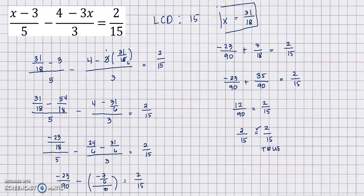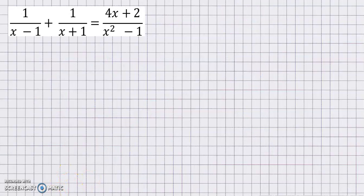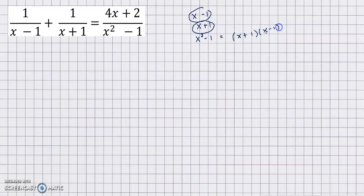For the last example, we identify the LCD of the denominators: x minus 1, x plus 1, and x squared minus 1. Since x squared minus 1 factors as (x plus 1)(x minus 1) by the difference of two squares, the LCD is (x plus 1)(x minus 1). We then multiply both sides of the equation by (x plus 1)(x minus 1).